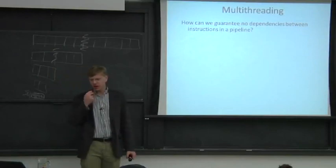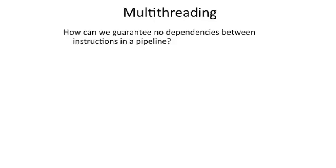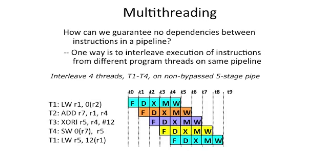The idea here is if we can guarantee that there's no dependence between the instructions, we can execute those instructions in parallel. One really good way to have guaranteed independence is to have completely different programs or completely different threads.